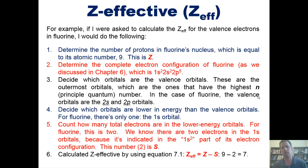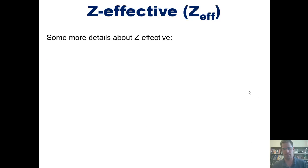In step 6, we now calculate the Z-effective using that equation, which is equal to Z minus S, which for the numbers we've been given are 9 minus 2, which equals 7. That is the Z-effective for an outermost electron in fluorine. Now for some more details about Z-effective.